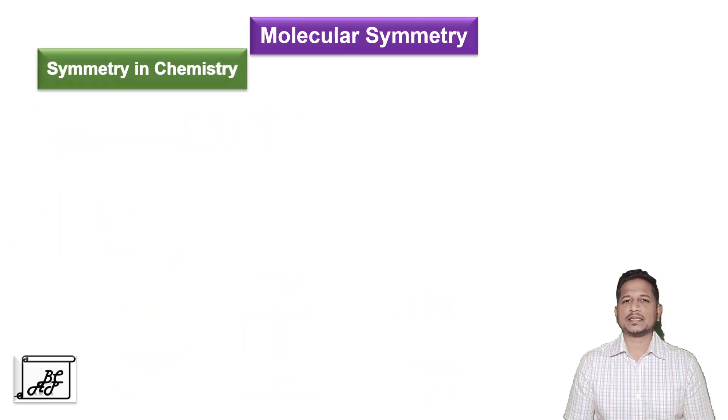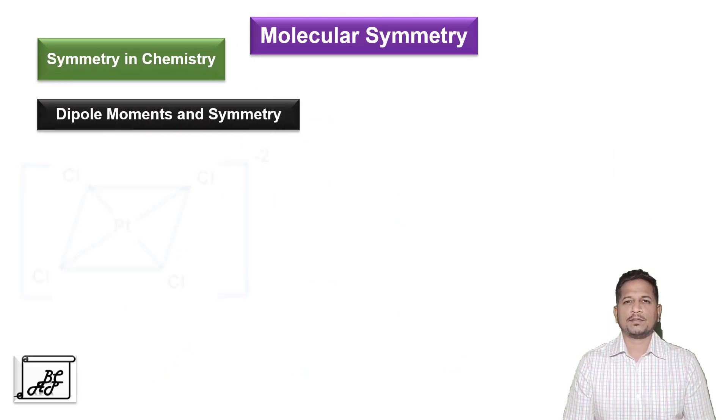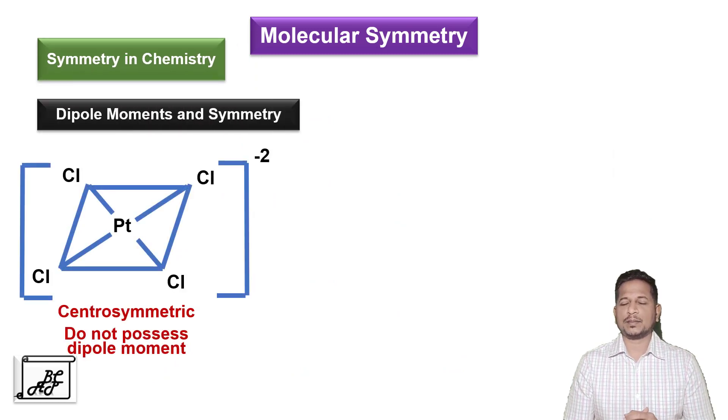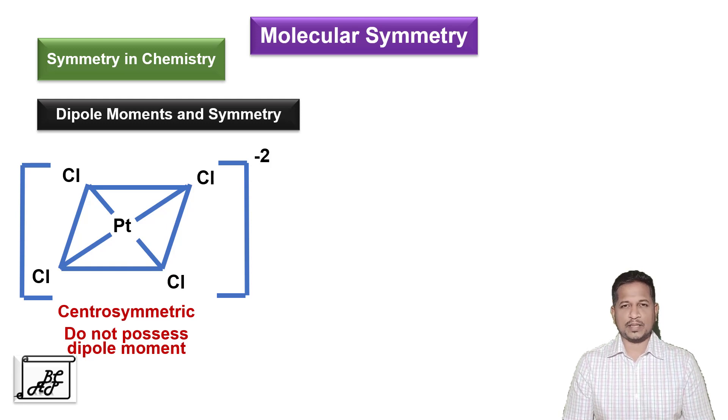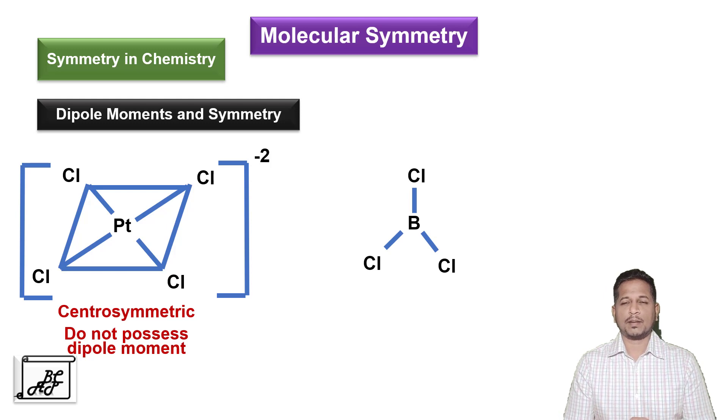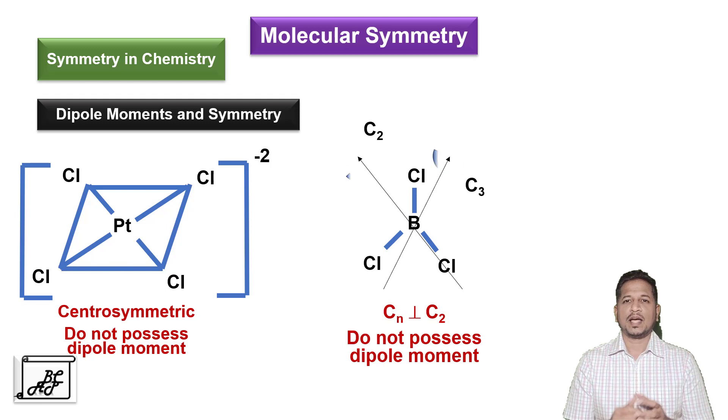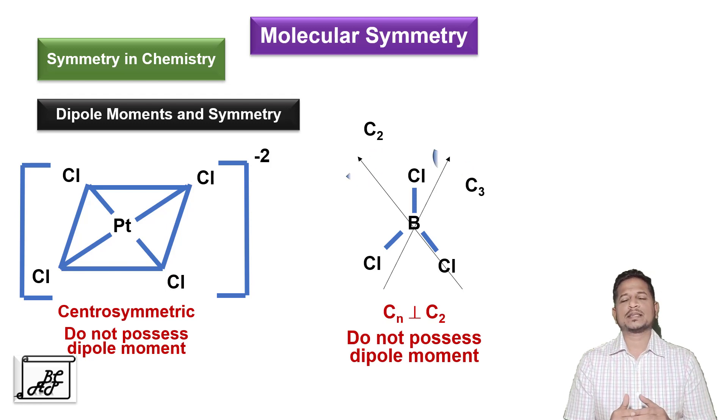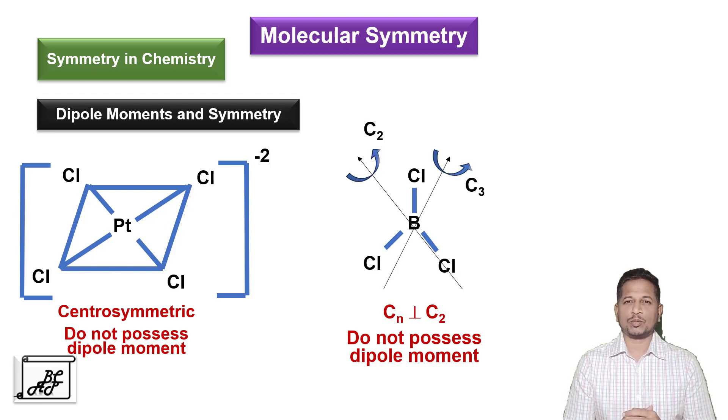The first reason is dipole moment and symmetry. If we study molecule like platinum tetrachloride, it consists of four chlorine atoms which are at opposite sides at equal distance. Therefore, it is a center of symmetric molecule and does not possess dipole moment. If we study another molecule like boron trichloride, it does not possess center of symmetry but it possesses two axes of symmetry, the C2 axis and C3 axis of symmetry. These two axes are perpendicular to each other and therefore this molecule does not possess dipole moment.